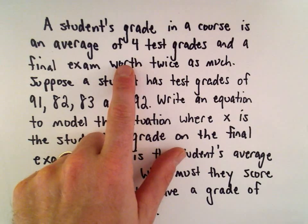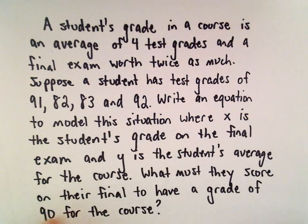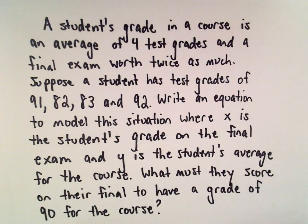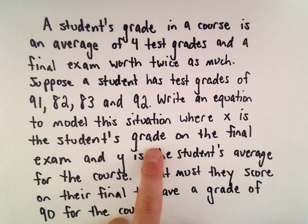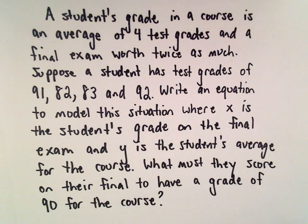Suppose a student's grade is based on four tests and a final worth twice as much, and the student makes a 91, 82, 83, and 92 on those four tests. We're going to write an equation to model the situation where X is the student's grade on the final exam and Y is the student's average for the course. Then we want to know what score must they actually make on the final to get a 90 for the class.